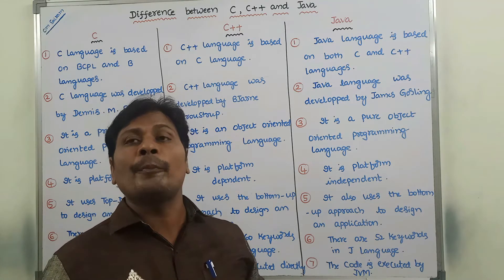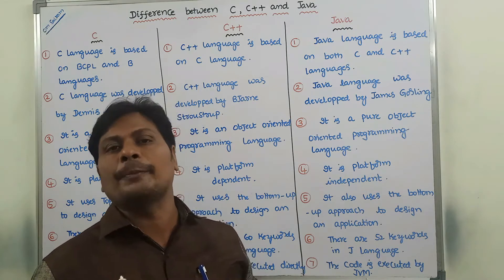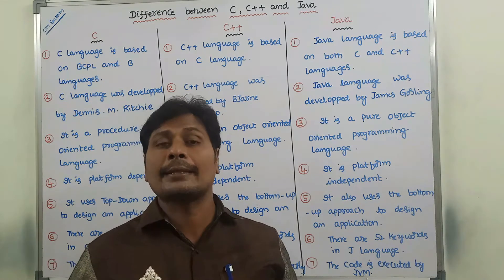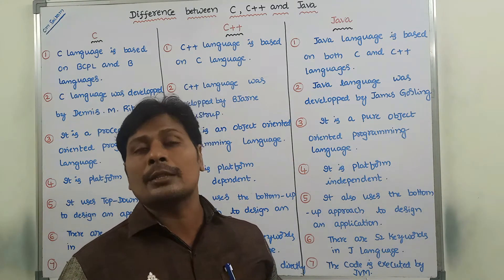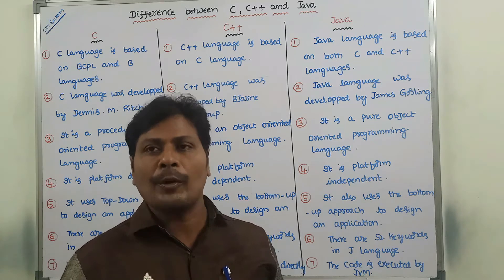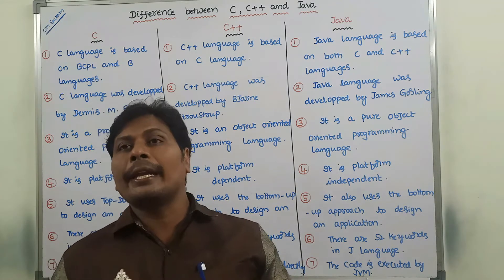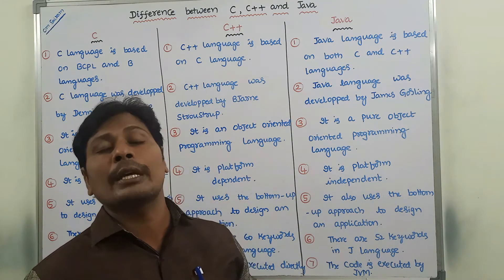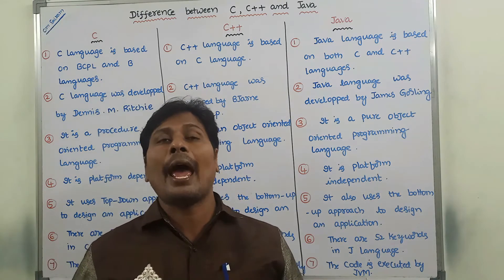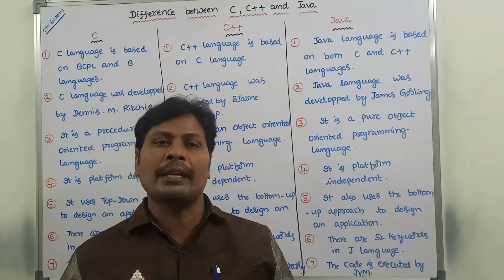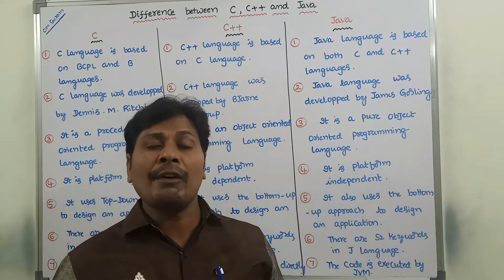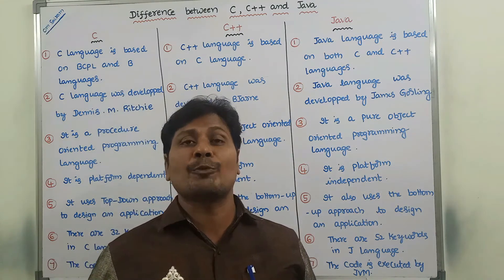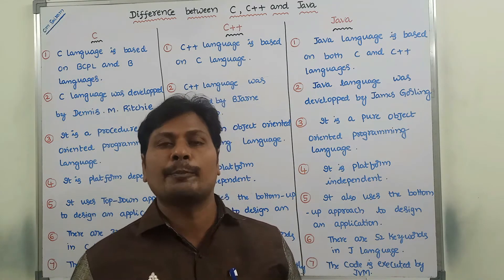In a pure object-oriented programming language, to implement any program we have to use the class concept. Whereas in an object-oriented programming language like C++, we can also construct a program without using a class. Since in Java we cannot construct a single program without using a class, Java is called a pure object-oriented programming language, whereas C++ is only an object-oriented programming language.